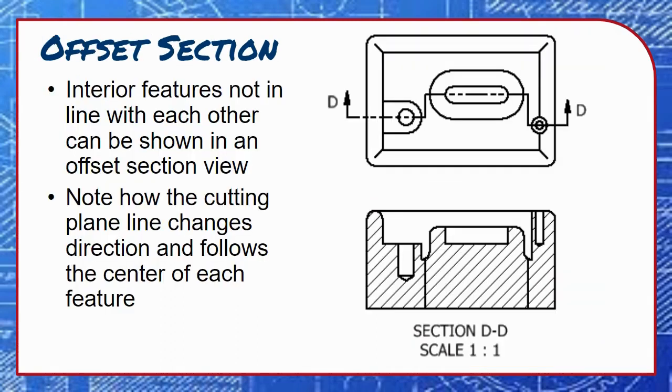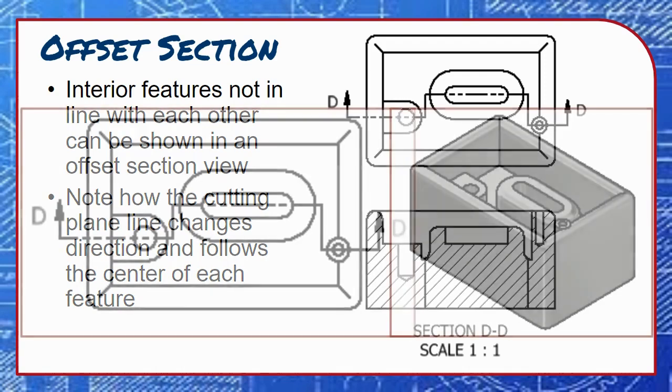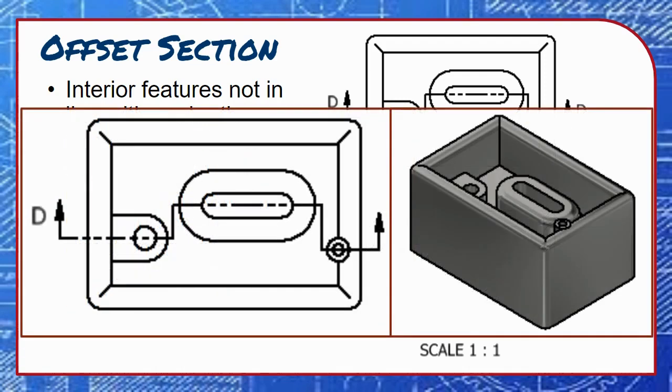Offset sections show multiple interior features in a single section view, even if the features don't line up with each other on the object. The cutting plane line changes direction as it travels through the part, slicing through the center of key features that would each need their own section view otherwise.